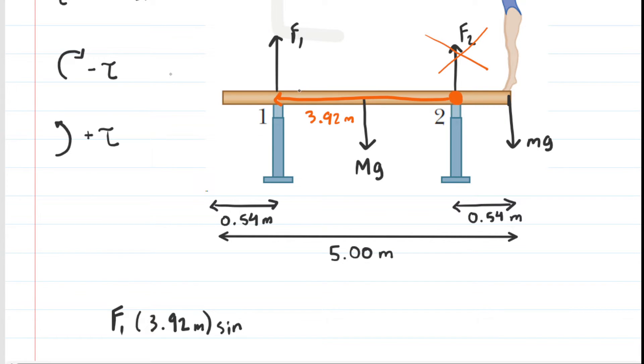You also want to determine if this is clockwise versus counterclockwise torque. Just try to imagine F1 pushing up on the beam, and remember that the beam is pivoted at that orange point. If you press up on the beam and pivot it at that orange point, the beam would have a tendency to rotate in the clockwise direction. So that will be negative torque. And the sine of 90 is just 1, so we can omit that term from our equation. So that's the torque supplied by F1.